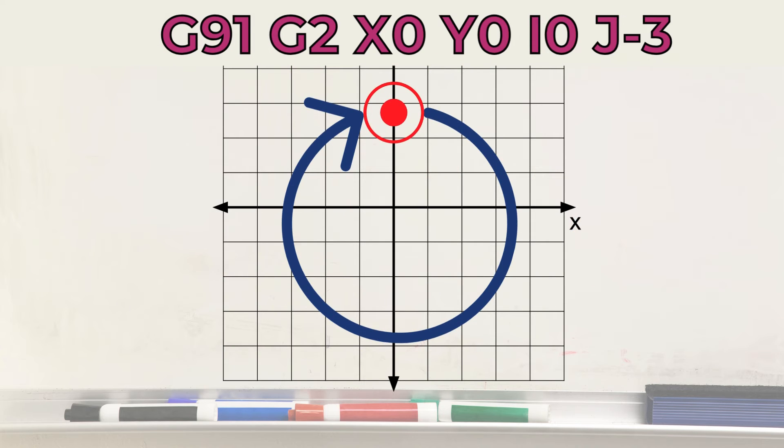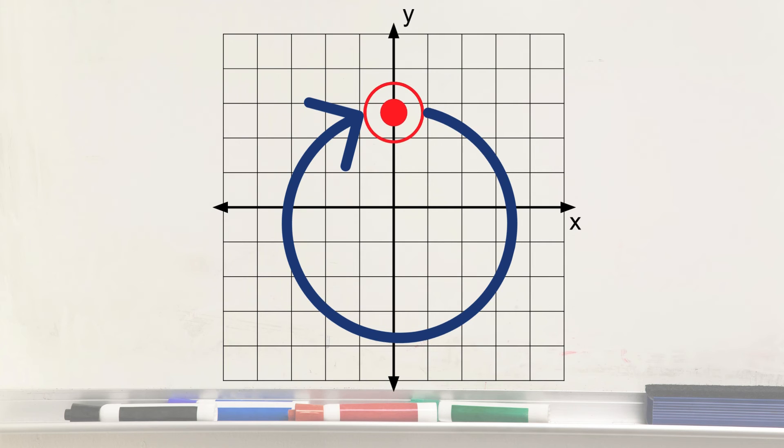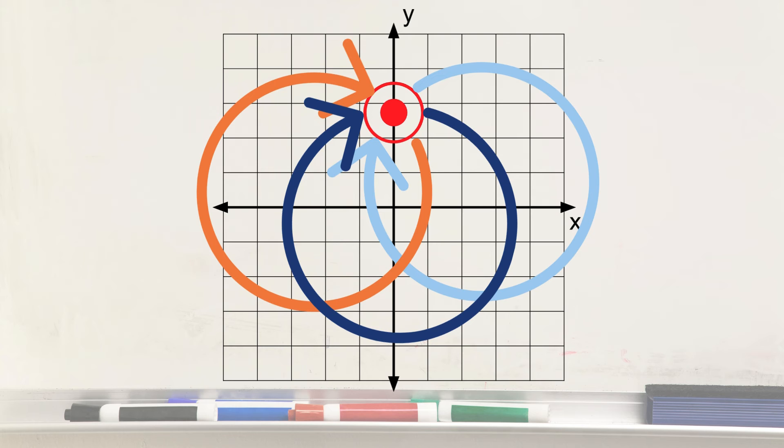If you are machining a full 360-circle, you must use IJ-format, since there are infinite circles with the same radius that can start and end in the same position.